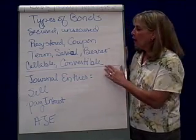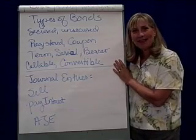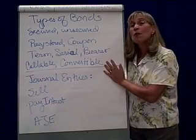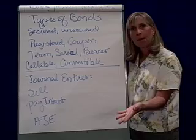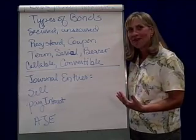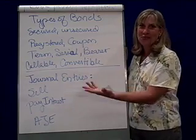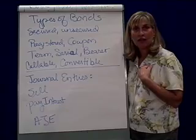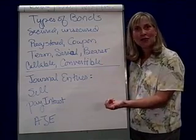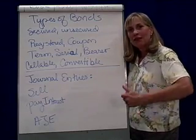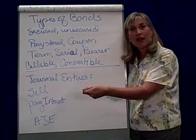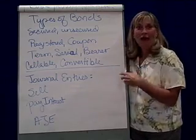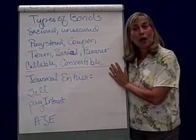Convertible bonds are the best kind of bond. You borrow money by issuing bonds, but you also have a feature that says you're willing to convert this bond into so many shares of stock. From a company's point of view, they love it because they never have to pay back the bond — all they do is issue stock instead. As an investor, you buy a bond, hold it, collect interest on a semi-annual basis, and if the stock market goes up, you can give the bond back to the company and get shares of stock at a set price. You can play the market both ways, through debt and through ownership.